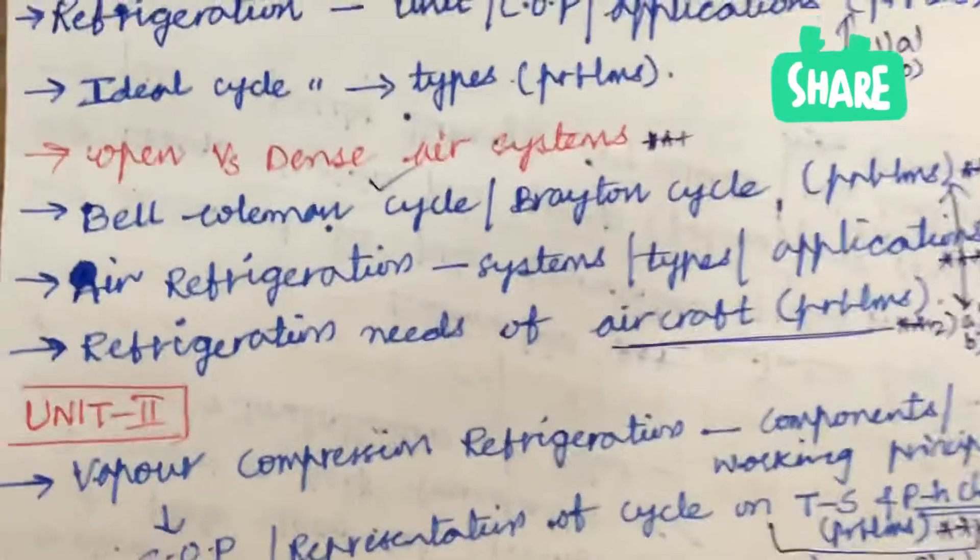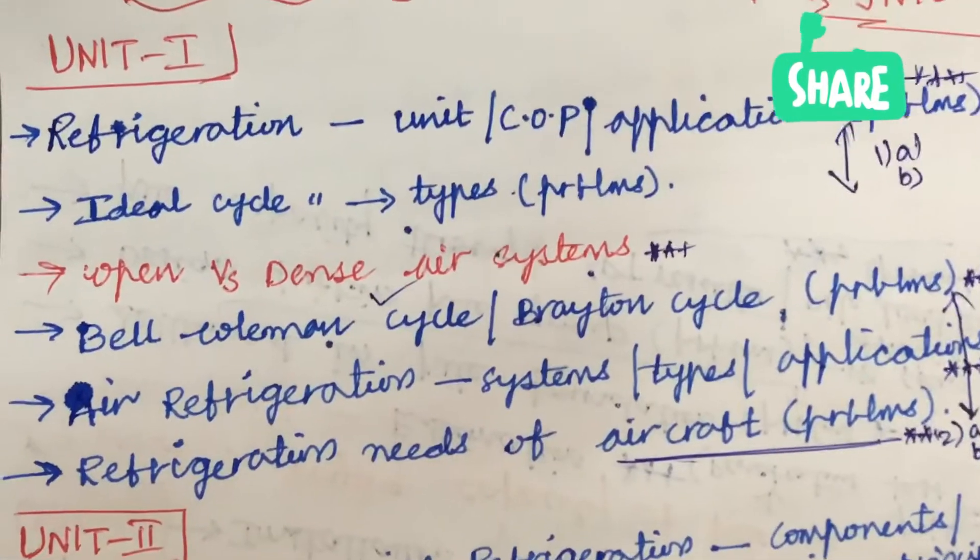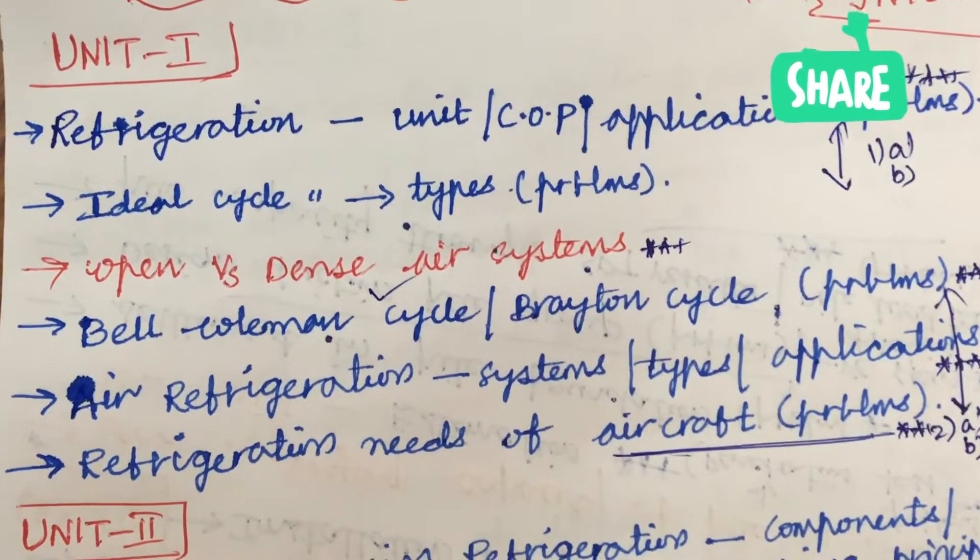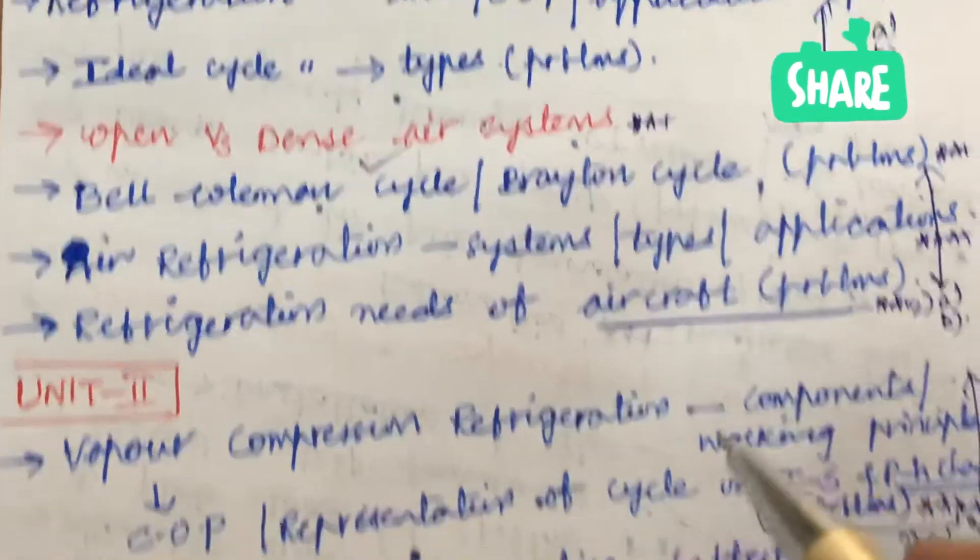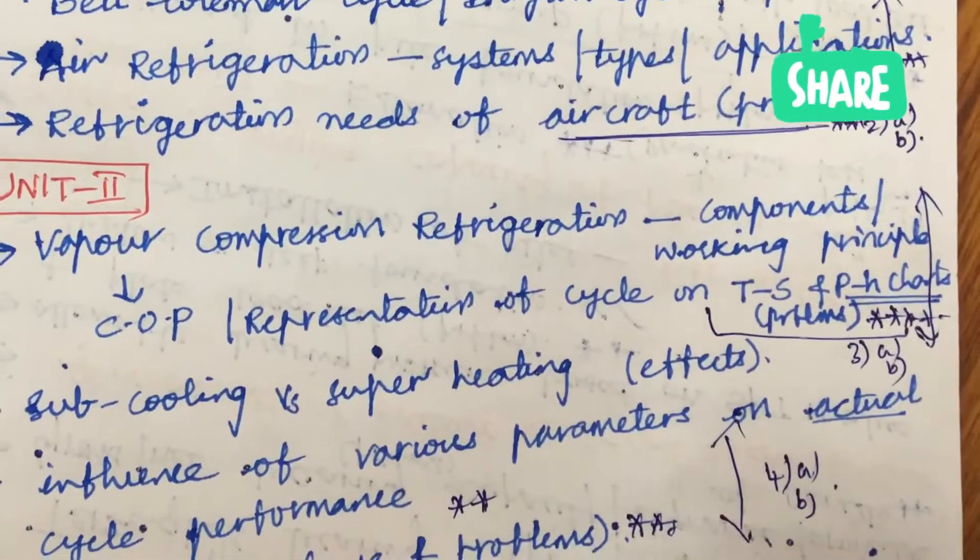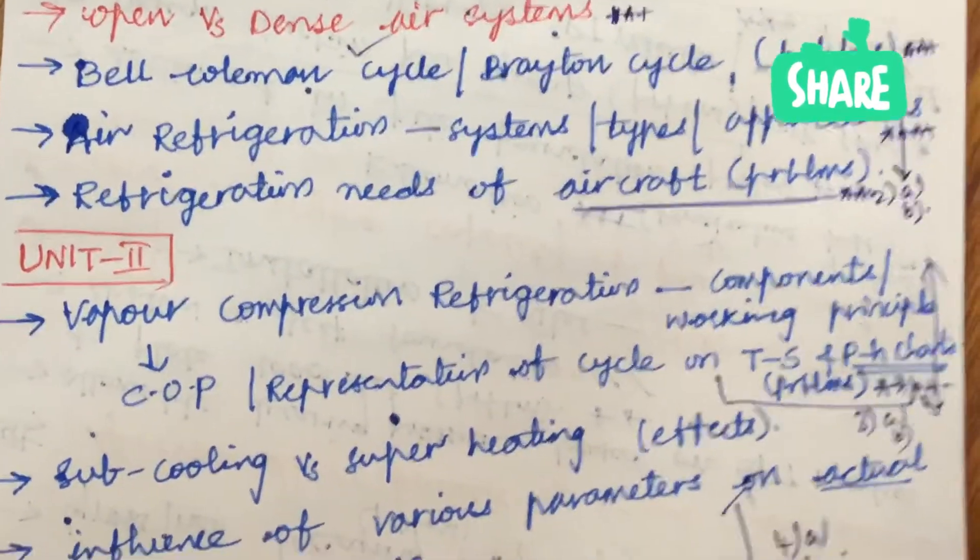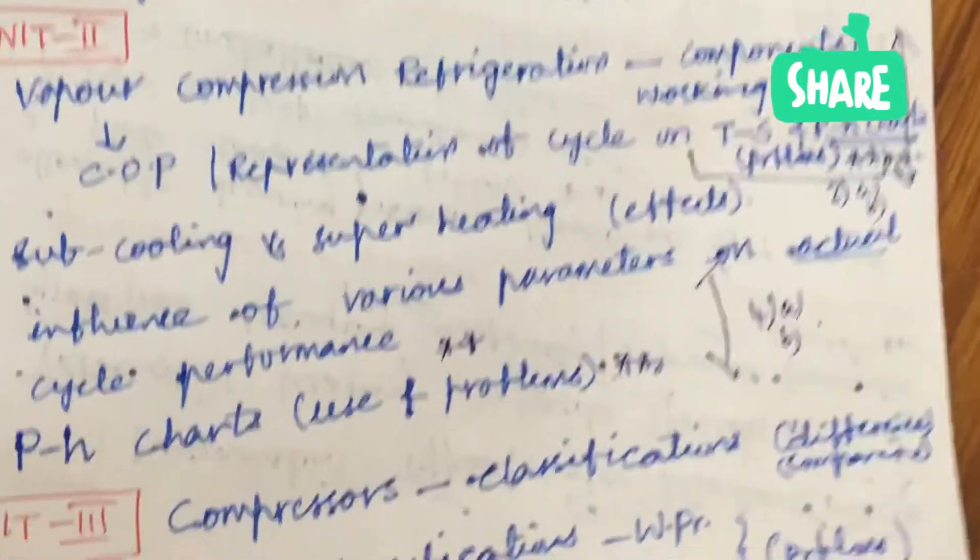A student who is feeling difficulty in clearing the subject, as per the COVID pattern you are going to get 8 questions of which you are supposed to attempt any 5. The first unit contains 2 questions as well as second unit contains 2 questions. Make sure to work out and you can write 4 out of 4 questions if you are perfect with these concepts which I have explained here.